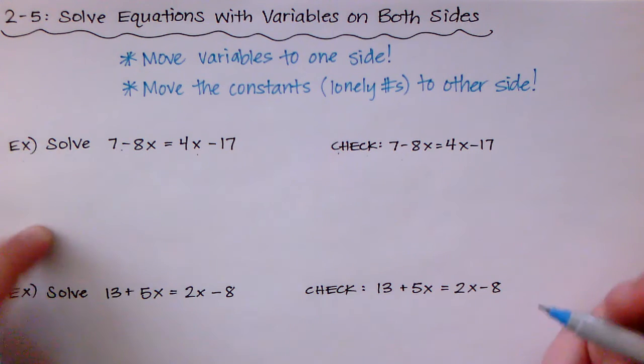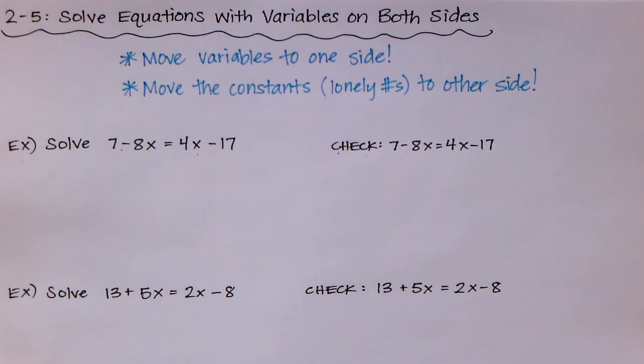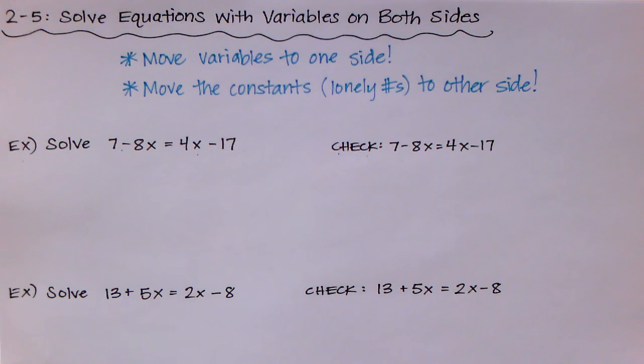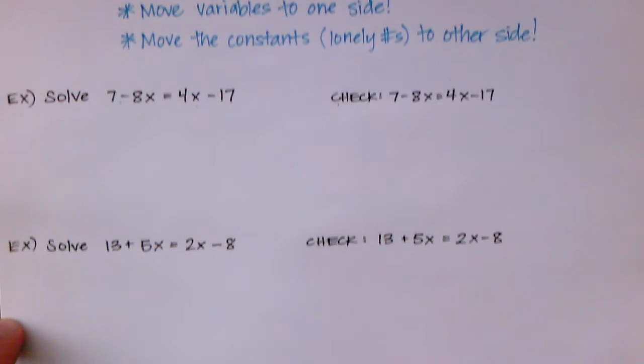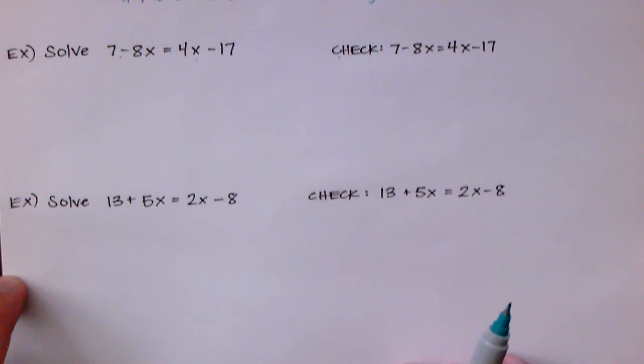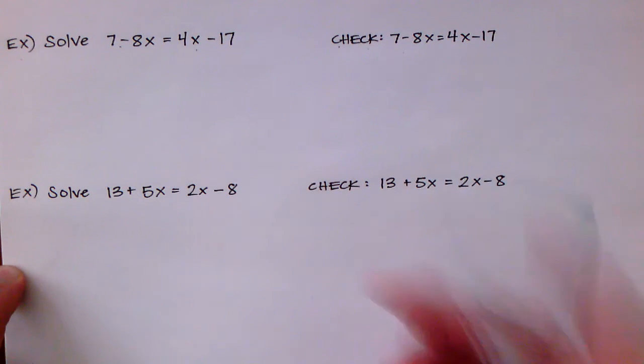Okay, so it's very straightforward compared to what we've been doing in the past couple lessons. So let's just begin. Let's look at this first one. It says to solve 7 minus 8x which is equal to 4x minus 17.